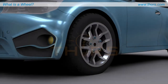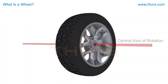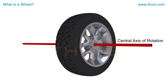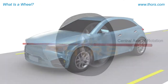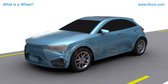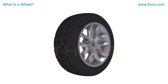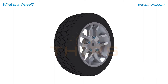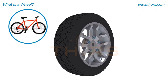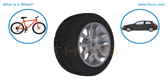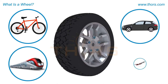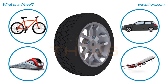A wheel is a circular object which rotates about its central axis and enables movement. Wheels have innumerable applications and are part of almost every moving object around us, such as bicycles, cars, trains, and aircrafts.